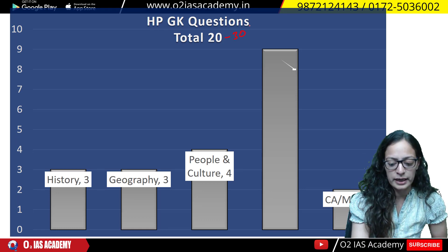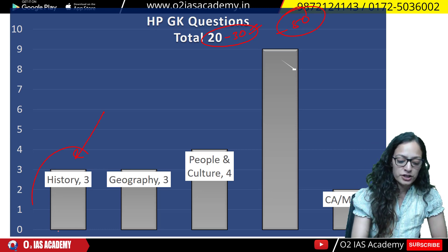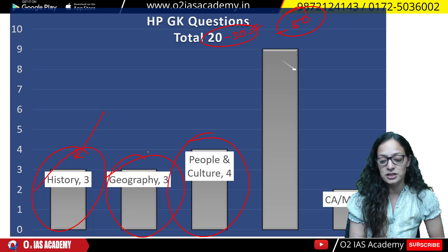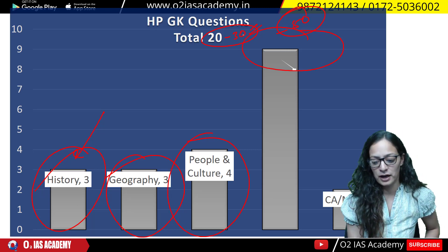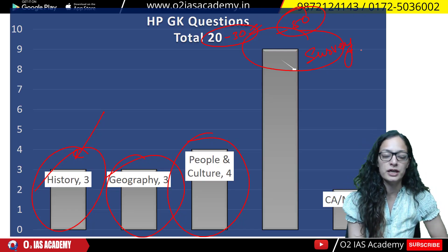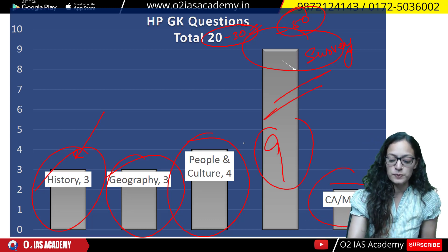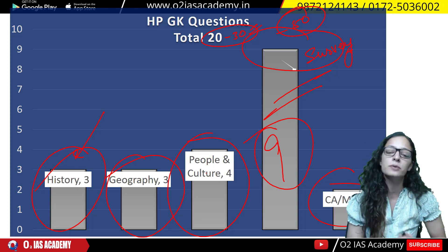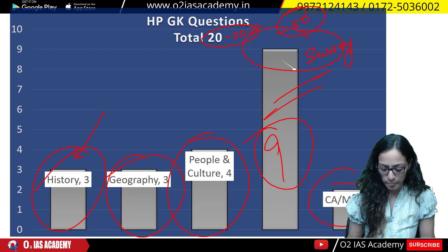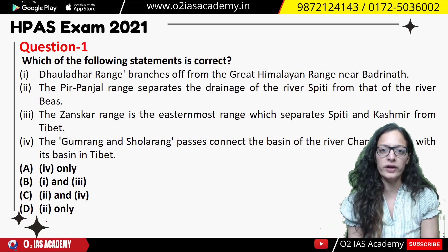20 to 30 questions are always asked in HHS. There are three areas: HP History, HP Geography, People and Culture. We've seen a lot of questions from these areas, plus a survey section. There are nine questions that came directly line-by-line from the Economic Survey — it's a very important document, as asked last year too. Let's start with the questions — not in series, randomly. They asked 20 questions.